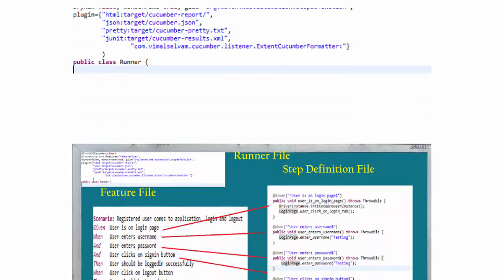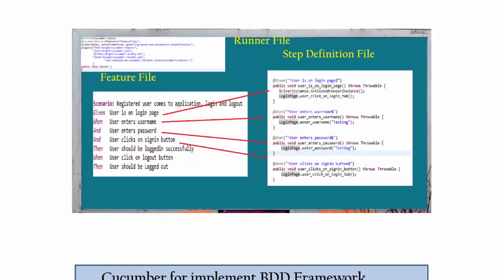Moving to the next image — this is very important. On the left-hand side there is a sample feature file. For each step written in the feature file, such as 'user is on the login page,' we have to write automation code. The step definition file has a method for each step — for example, a method to bring the user to the login page contains the automation code. So we write the feature file first, then the step definition file with actual automation code, and finally the runner file to execute the complete framework.